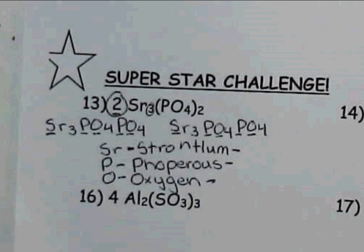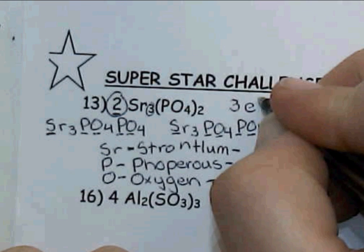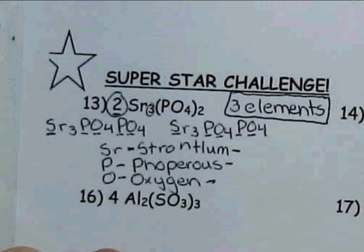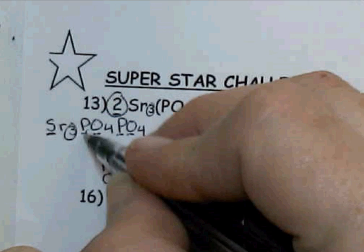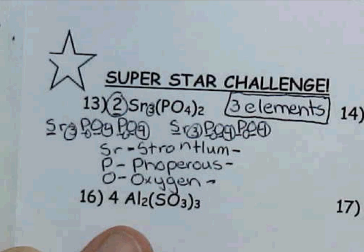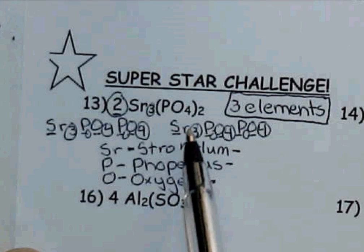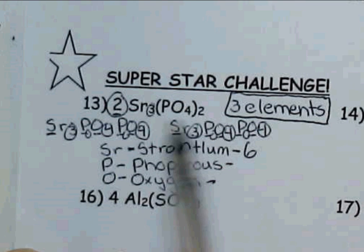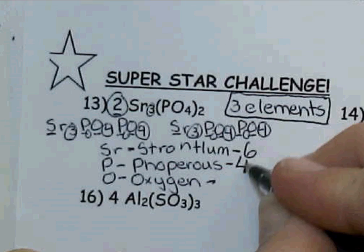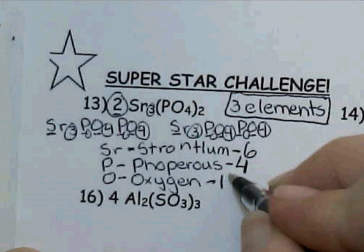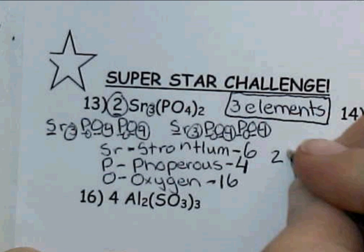So in this problem I still only have three elements — even though there are a lot of letters — strontinium, phosphorus, and oxygen. But if I count everything up: I have 3 strontinium plus 3 strontinium, for a total of 6. Phosphorus: 1, 2, 3, 4 — four of them. And oxygen: 4, 8, 12, 16 — sixteen atoms of oxygen. For a total of 26 atoms.